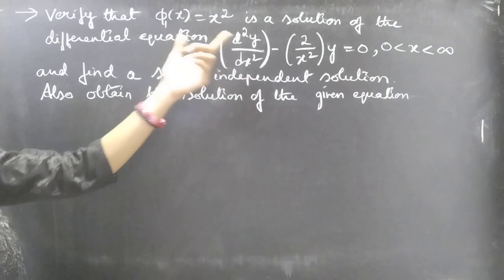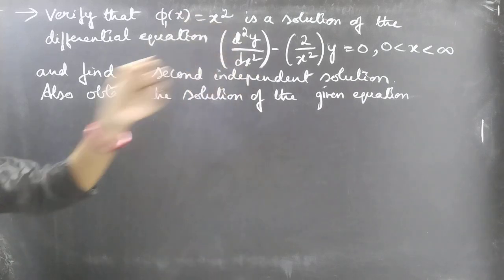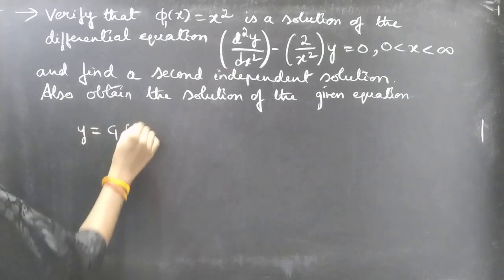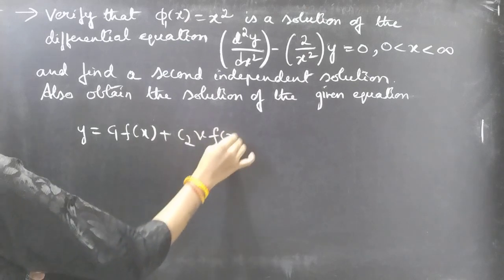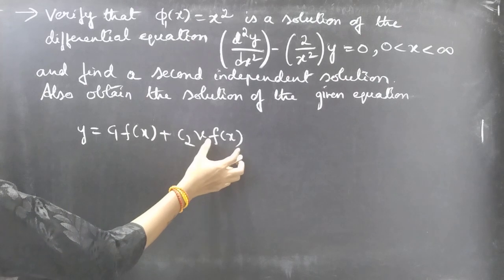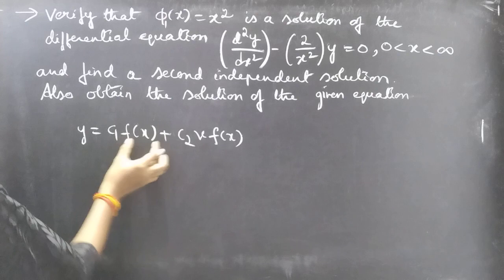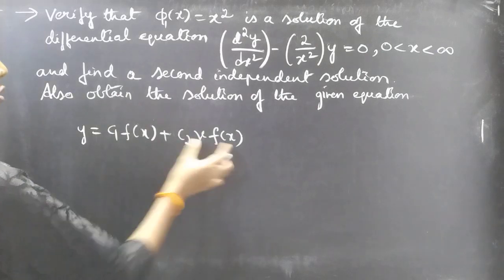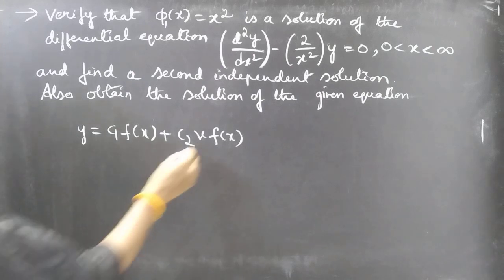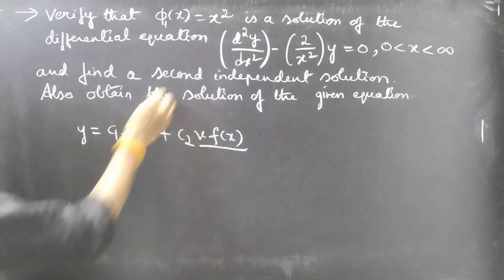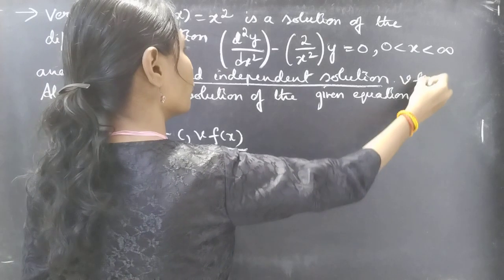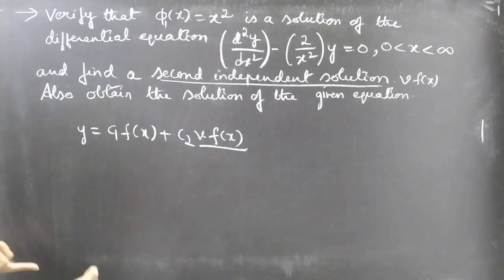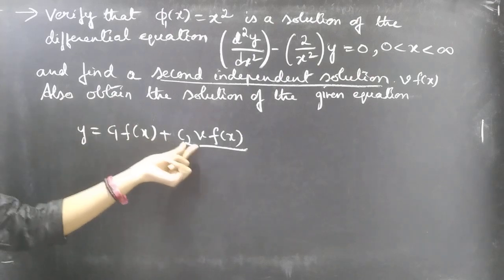If x² satisfies this equation then we can say that φ₁(x) = x² is a solution. We are also asked to find the second independent solution. The general solution is y = c₁f(x) + c₂·v·f(x), where f(x) and v·f(x) are two linearly independent solutions, and v·f(x) is the second linearly independent solution.